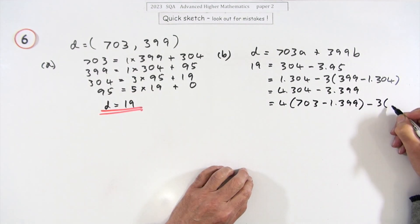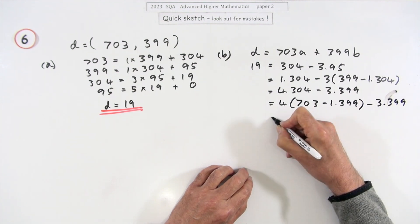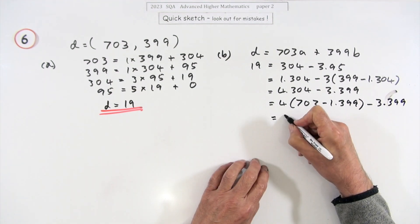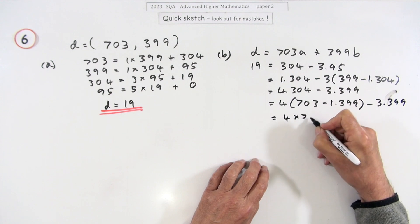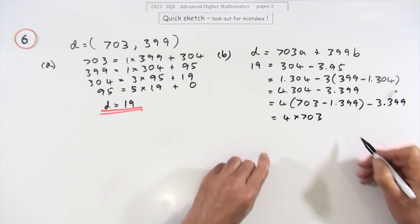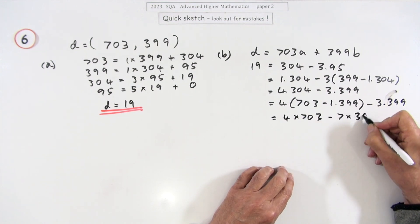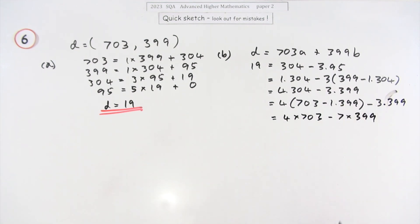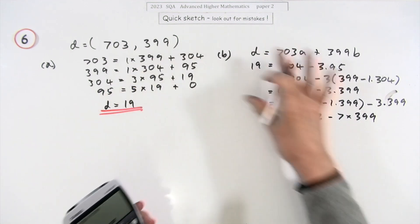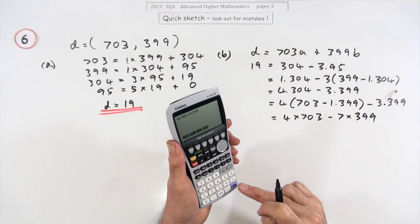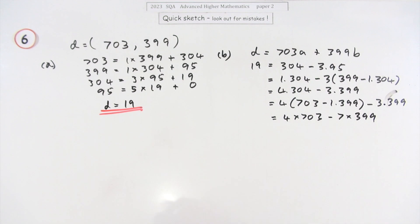Minus the three lots of 399 I've got so far. So finally, I'll just put it down now, four times 703 minus four minus three minus seven times 399, hopefully. But you can check if this is all correct just by seeing if that actually works. You press the button, 19, that was it.